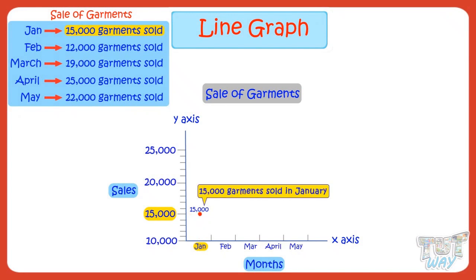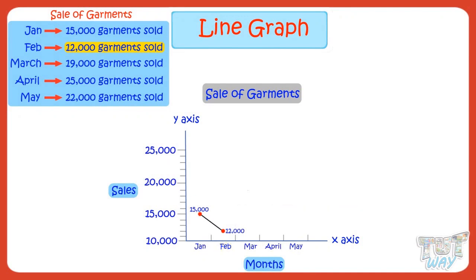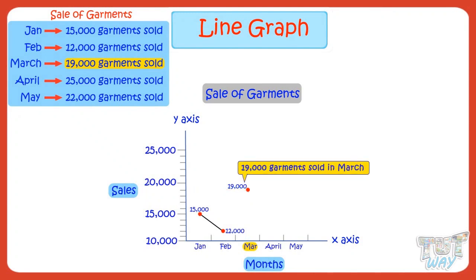We will make a dot along the month of January and the sales of 15,000. This dot corresponds to the month of January and sales of 15,000 garments. Now plot the next information: sales for February are 12,000 garments. So we will make a dot along the month of February and the sales of 12,000. This dot corresponds to the month of February and sales of 12,000 garments. Now join the two dots using a line. We will then make a dot along the month of March and sales of 19,000.